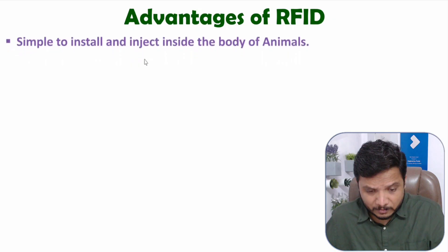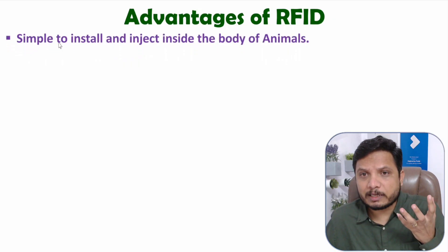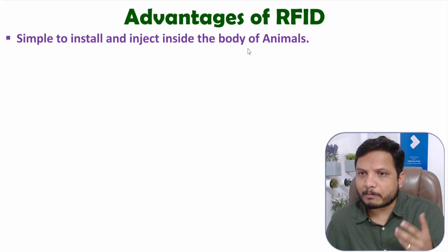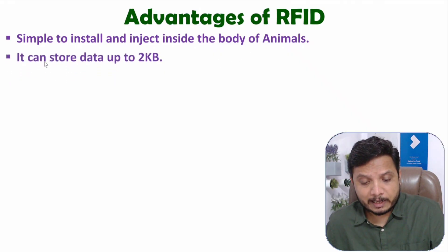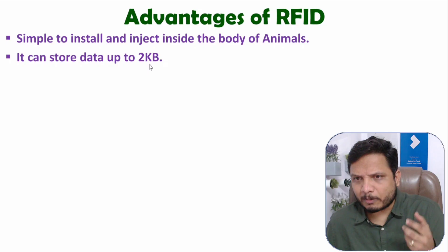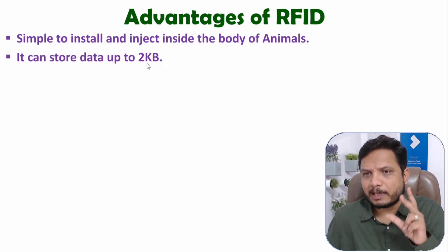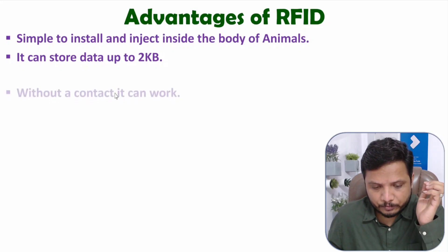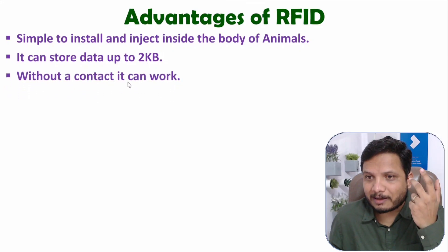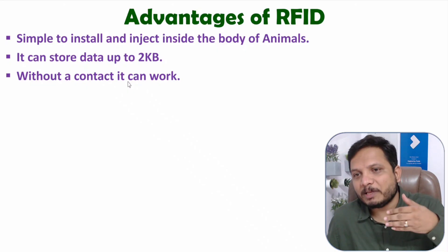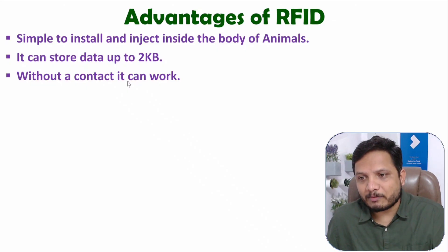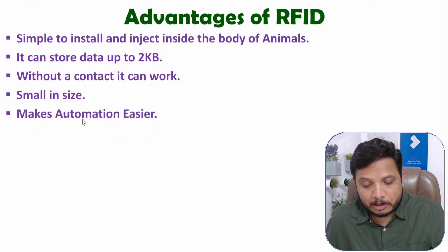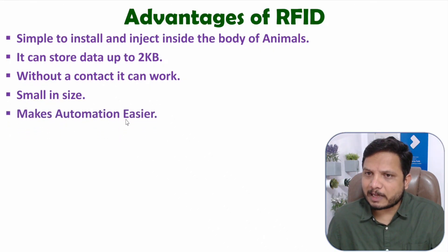Now let me discuss advantages. RFID is very easy to install — one can even inject a tag inside the body of an animal. A normal RFID tag can store up to 2KB of data, and that 2KB is sufficient for object identification. Without contact it can work, which is the main thing — wireless communication is happening. It is small in size and it makes automation easier.